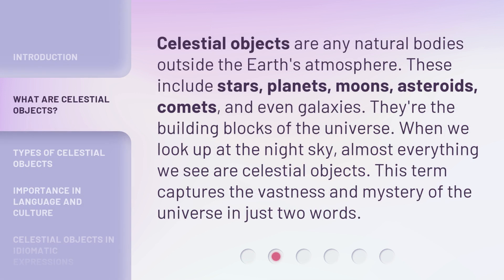Celestial objects are any natural bodies outside the Earth's atmosphere. These include stars, planets, moons, asteroids, comets, and even galaxies. They're the building blocks of the universe. When we look up at the night sky, almost everything we see are celestial objects. This term captures the vastness and mystery of the universe in just two words.